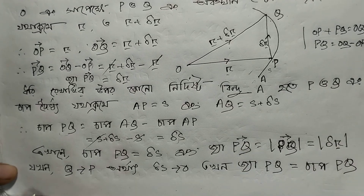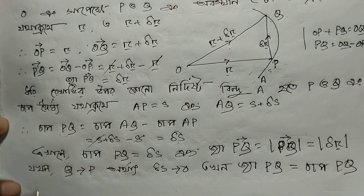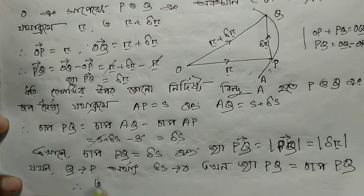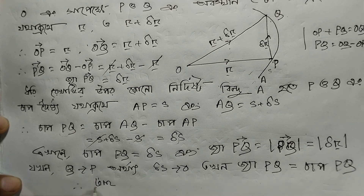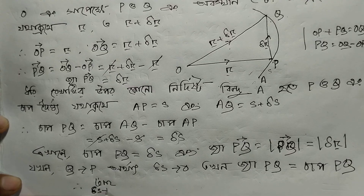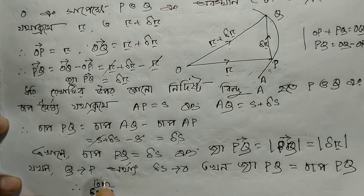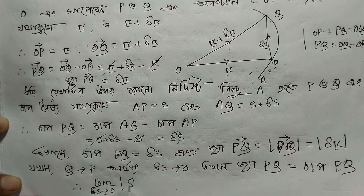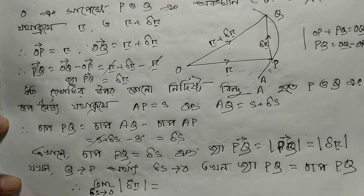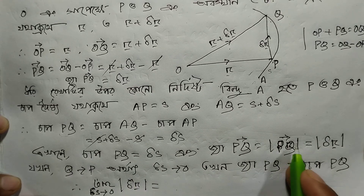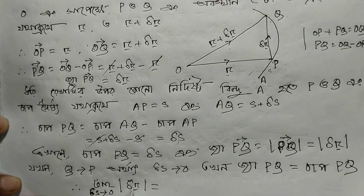The limit as del s tends to zero equals the modulus of the inverse — divided by del r. The limit as del s tends to zero of del r over del s gives us the unit tangent vector.